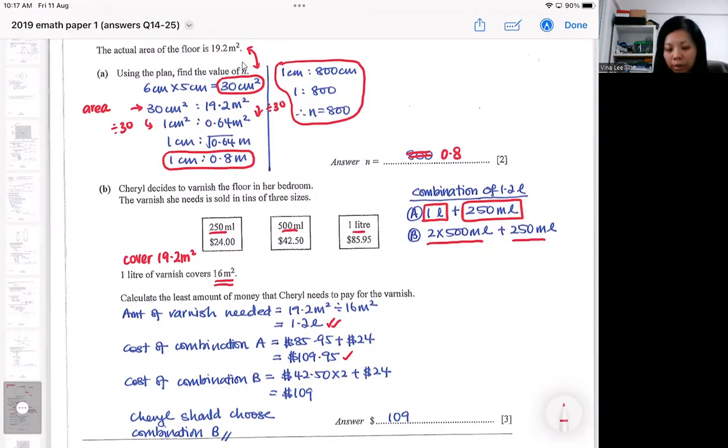Another way would be you buy two small ones and then a 250, you go and calculate the cost. You actually get $109. So the second combination should be the one that you chose because it's cheaper. It gives the same combination of 1.2 liters. Some people will have this question wrong because they didn't check out another combination where you can make a 1.2 liter of varnish.